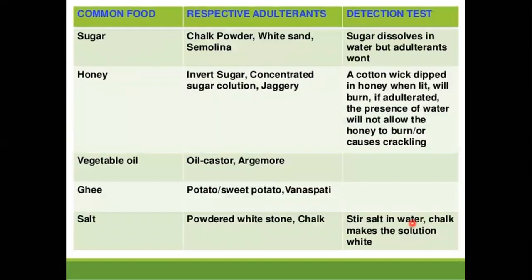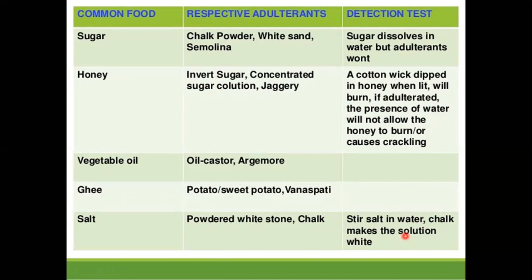For detection methods in detail: sugar is adulterated with chalk powder, white sand and semolina — sugar dissolves in water but adulterants do not. Honey is adulterated with concentrated sugar solution and jaggery — a cotton wick dipped in honey that burns is pure; presence of water prevents burning and causes crackling. In vegetable oil, castor oil and argemone oil are mixed. In ghee, sweet potato or vanaspati ghee is mixed. In salt, powdered white stone or chalk powder is mixed — stirring in water shows salt dissolves but white powder remains, making a whitish solution.